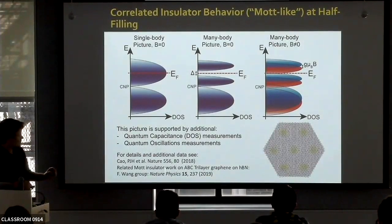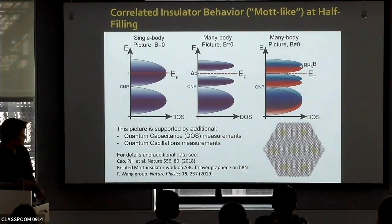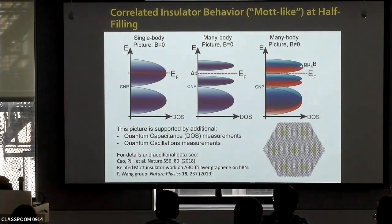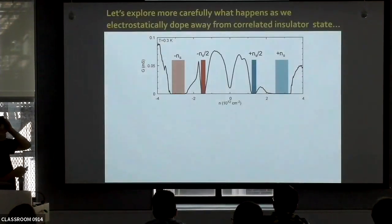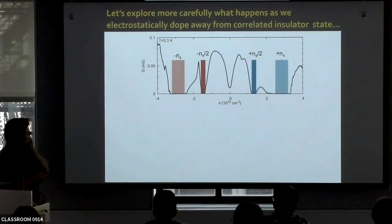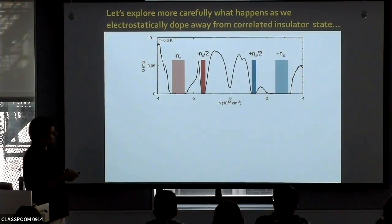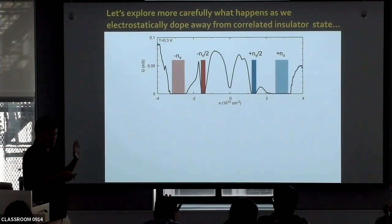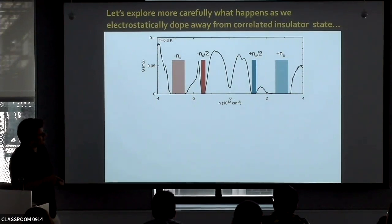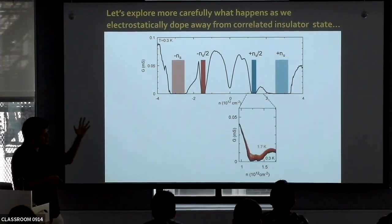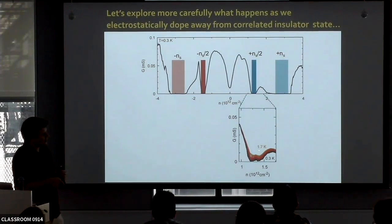Let me show you about superconductivity. When we were doing these experiments, we were measuring conductance versus density and doing temperature dependence. Around the correlated insulator state for electrons, in these initial devices, the conductance decreased as we cooled down — that's what an insulator does. However, around the correlated insulator state for holes, right next to the insulator itself, there was a region where the conductance increased very fast as we cooled down in temperature.